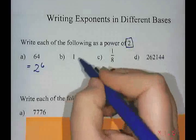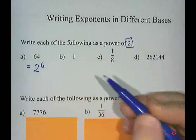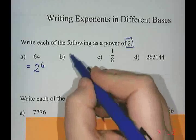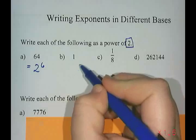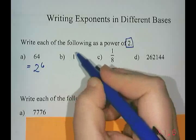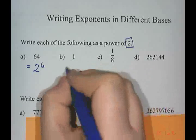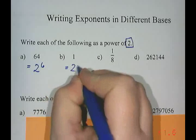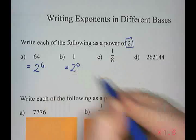Now one is a very special example. Anything to the power of zero equals one, so this would be two to the power of zero.